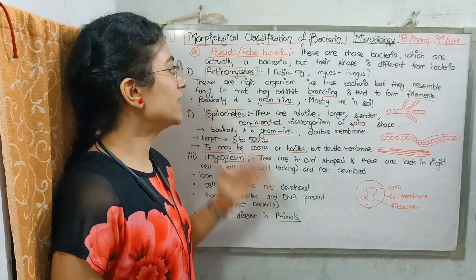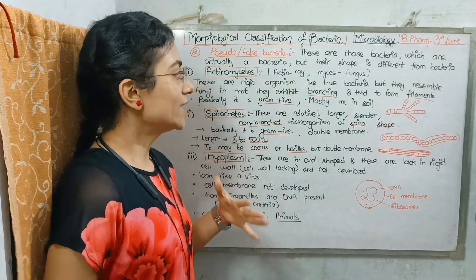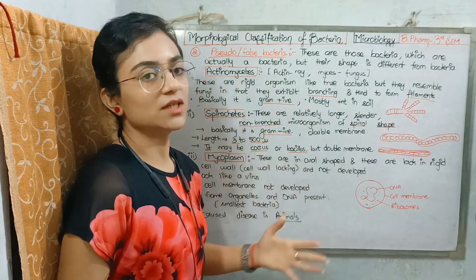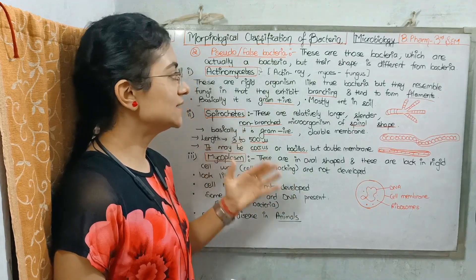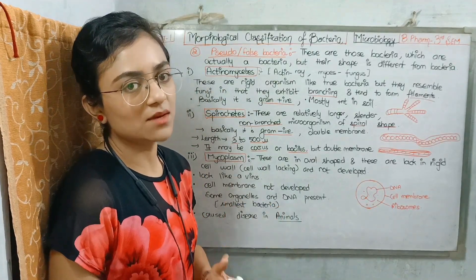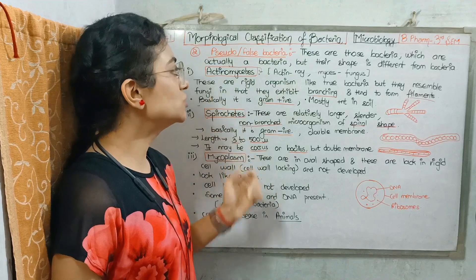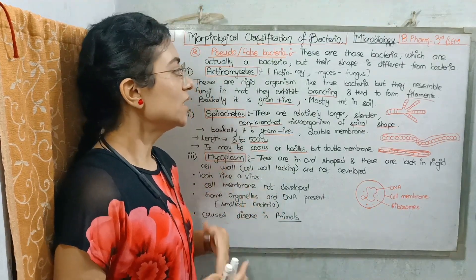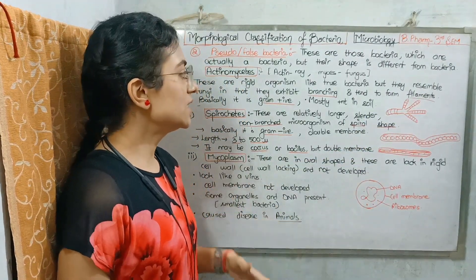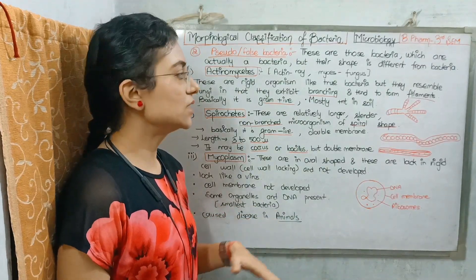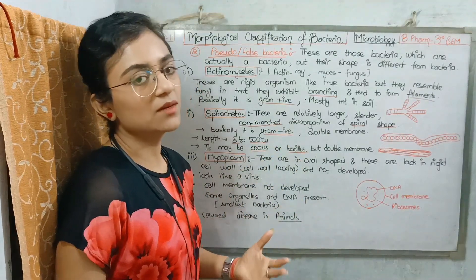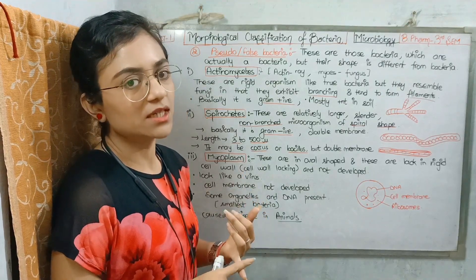First, we study Actinomycetes. Actinomycetes are derived from 'actin' and 'mycetes' — mycetes means fungus. This is a rigid organism like true bacteria but it resembles fungi. It has a branching form and forms filaments. This is gram-positive bacteria and is mostly found in soil.